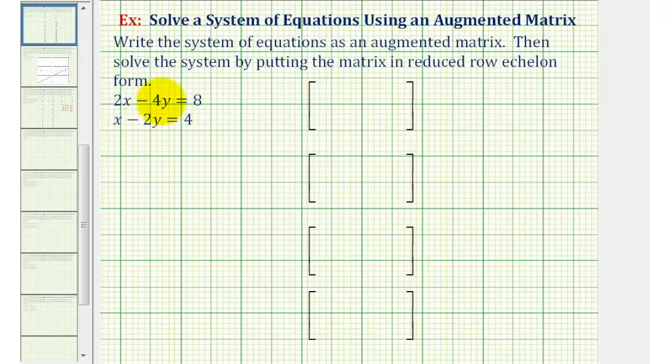Since both equations are in standard form, we can go ahead and write the augmented matrix where the first row will be 2, -4, 8, and the second row will be 1, -2, 4. Notice how the first column contains the coefficients of x, the second column contains the coefficients of y, and the third column contains the constants.